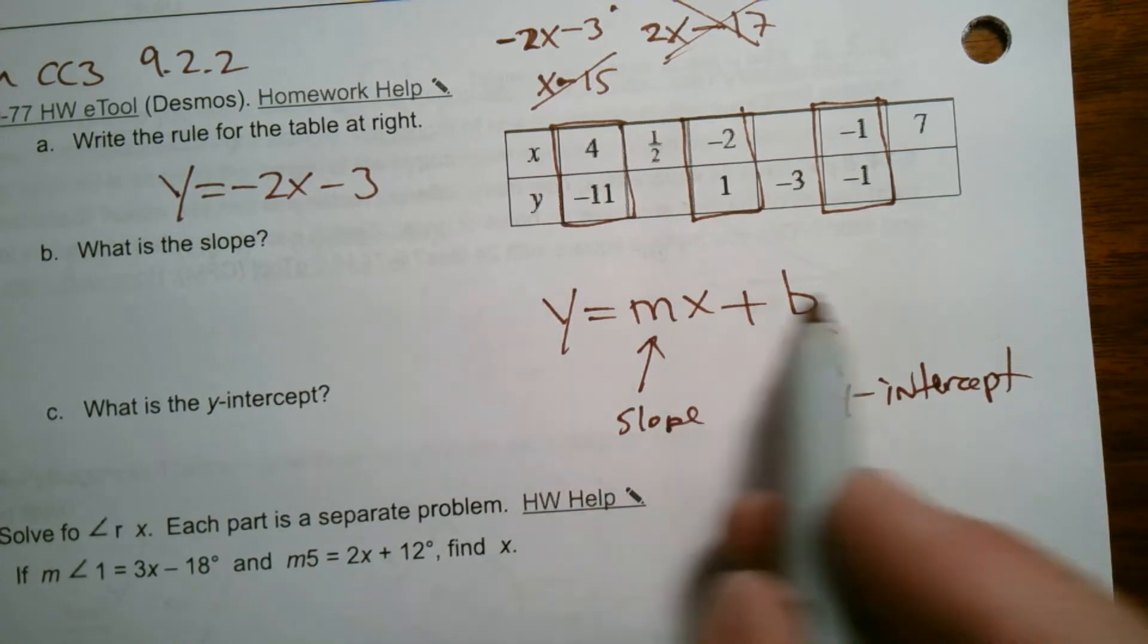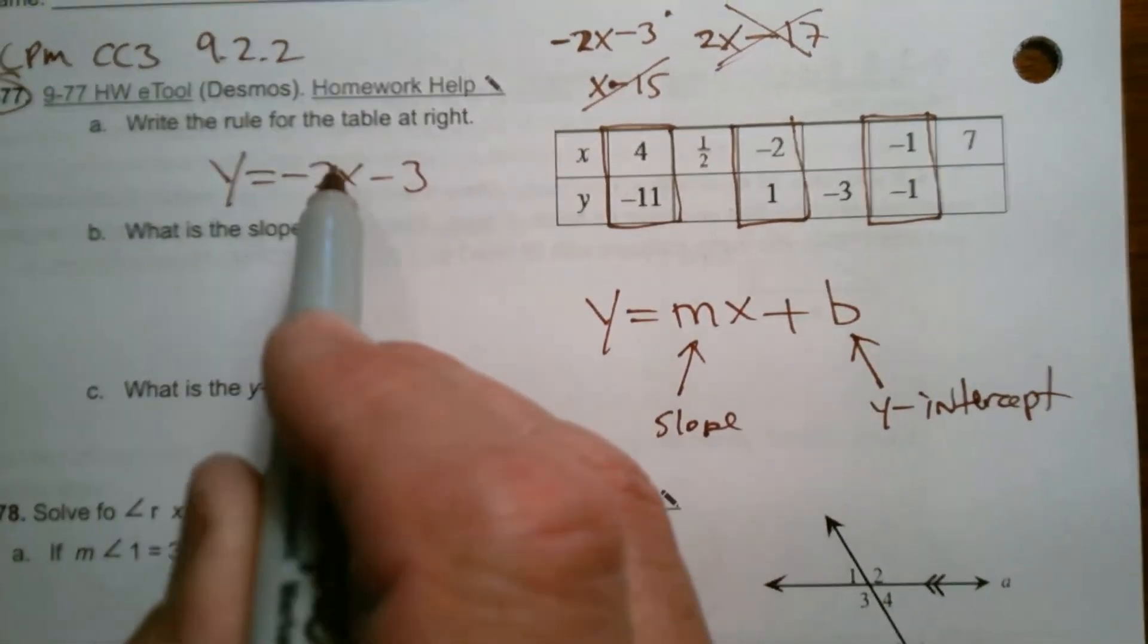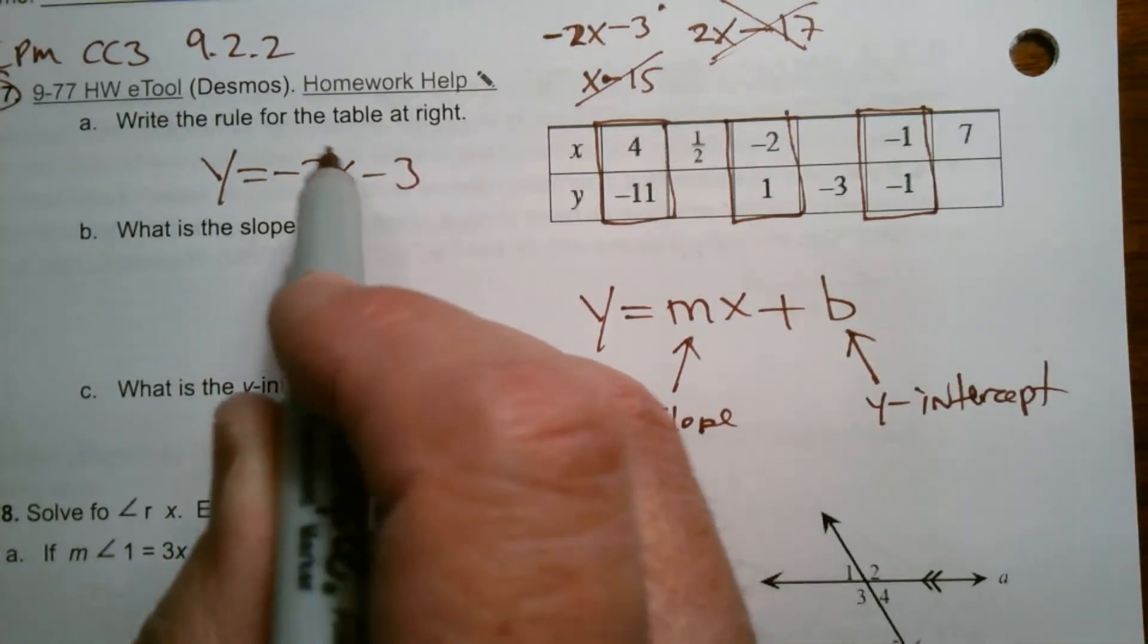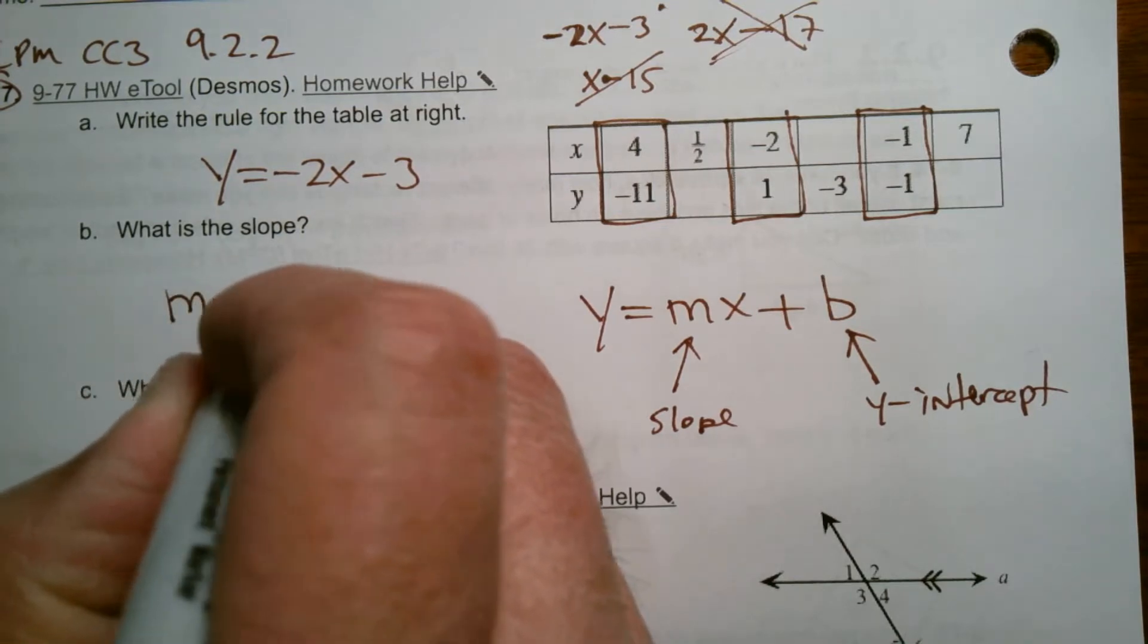So as long as it's in this form, I can pull the slope and the y-intercept from it. So if I look, where's my m? My m is the coefficient of the x. So that number, that negative 2, is the slope. So slope is equal to negative 2.